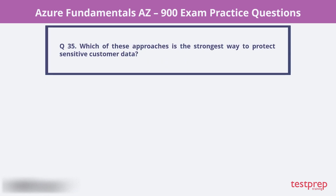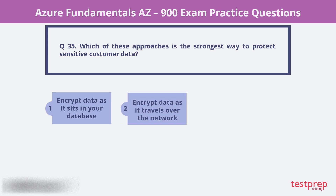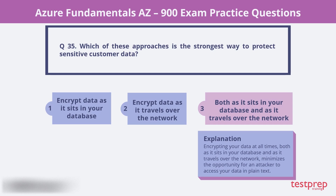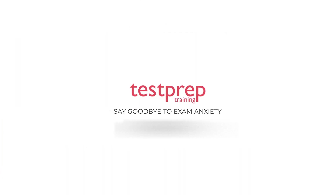Question 35. Which of these approaches is the strongest way to protect sensitive customer data? 1. Encrypt data as it sits in your database. 2. Encrypt data as it travels over the network. 3. Both as it sits in your database and as it travels over the network. Encrypting your data at all times, both as it sits in your database and as it travels over the network, minimizes the opportunity for an attacker to access your data in plain text. For more such videos, subscribe to our channel.